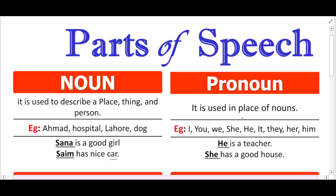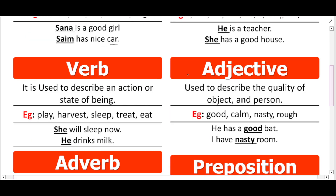Using a pronoun makes writing feel nicer and more readable. Now moving on to verb — any action that is happening, the word that describes that action is a verb. It describes what is happening or what someone is doing. For example: sleep, eat, drink — these are verbs. She will sleep now — 'sleep' is a verb. He drinks milk — 'drink' is a verb. That state or action is called a verb.